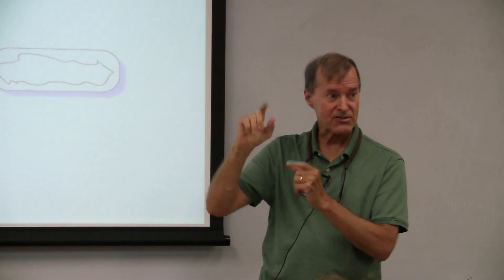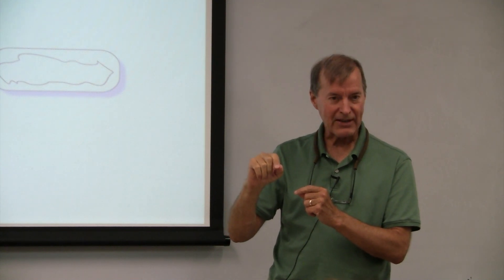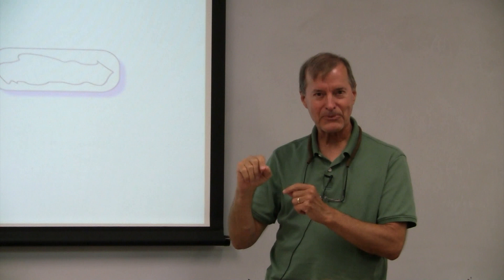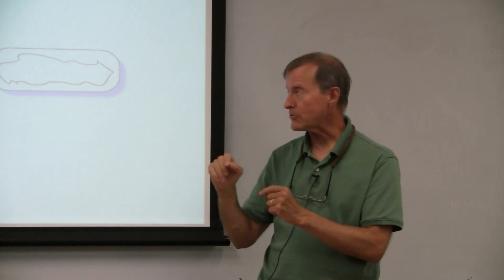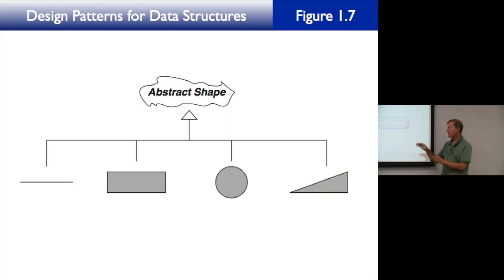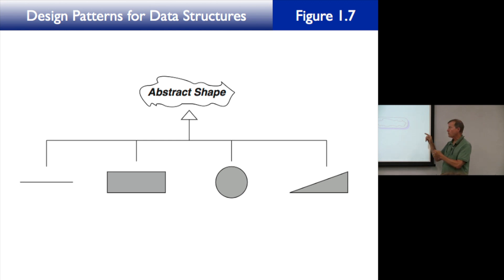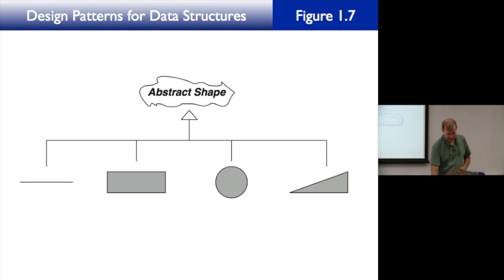You combine structure abstraction with procedure abstraction and together they make up a class — that's class abstraction. Then at the highest level we have behavior abstraction, illustrated in figure 1.7, where you can have many different classes as subclasses of one superclass. We'll see today why this is called behavior abstraction.